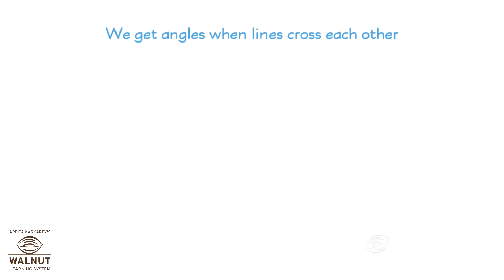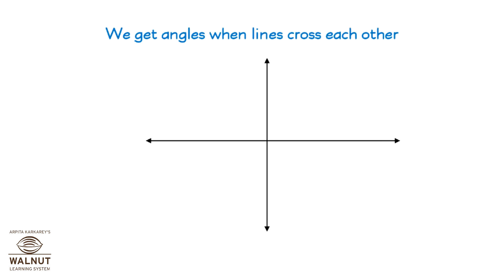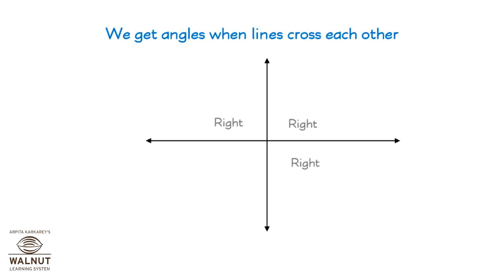When two lines cross each other, they make an angle. What angles are formed here? Right. Right. Right. Right.